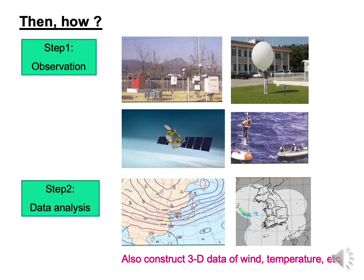First, various observation data are available to cover the current state in three dimensions: surface, sonde, satellite, and ocean buoy. These data transfer to regional and national centers and across countries. Archived data at national centers over the globe are analyzed to examine the current status of the weather. At the same time, digital data are used to make initial conditions for weather forecast models.